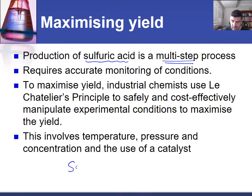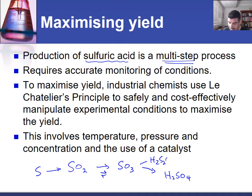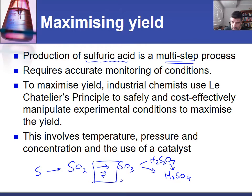We need to form sulfur dioxide as a primary product — sometimes that will come from sulfur obtained through the Frasch process — then we need to go to sulfur trioxide and then to sulfuric acid. Along the way we have a very important equilibrium reaction and sometimes an intermediate, the oleum. The step that takes us from sulfur dioxide to sulfur trioxide is an equilibrium, and because it's an equilibrium we can use Le Châtelier's principle to manipulate conditions in a safe and cost-effective way to maximize yield.